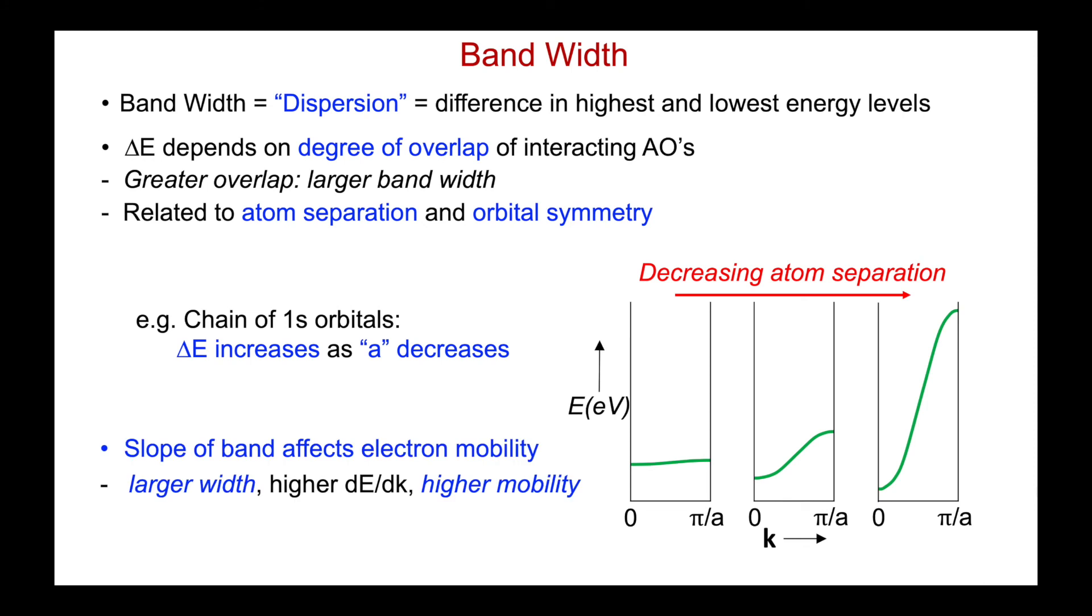As it turns out, although we won't get into it, the slope of the band affects the electron mobility. And if there's a larger width to the band, a larger dispersion, and a larger slope, that leads to a higher electron mobility.